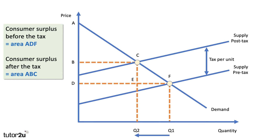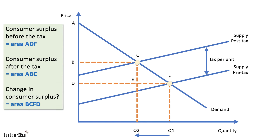The price has gone up from D to B and the quantity has contracted from Q1 to Q2. So now consumer surplus after the tax is area ABC. Consumers having to pay a higher price means there's been a loss of consumer surplus of area BCFD. If you get a question on indirect taxes — the opposite being a subsidy — do include the consequences for consumer surplus. It's a great idea to build into your analysis.